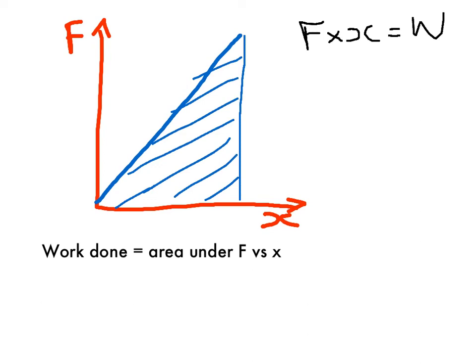What we do when we do that is we calculate half the base times the height area of a triangle. But remembering Hooke's Law that F equals kx, the magnitude of it anyway, if we substitute this in for F, because we're often not sure about F, we can measure the extension much more easily than we can measure the force.